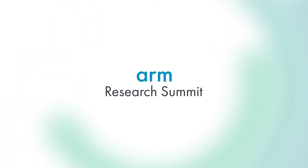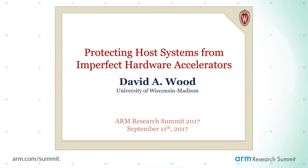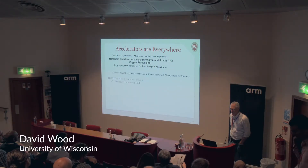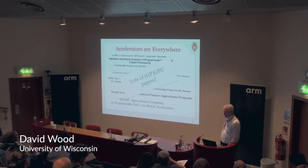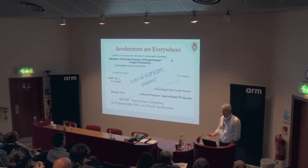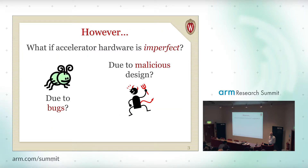Thank you. I'm going to be talking about protecting host systems from imperfect accelerators. We all know that accelerators are pretty much everywhere. Every conference you look at there's a bunch of new papers, and that doesn't even count all the GPGPU papers, which are also accelerators. The question we're interested in is: what if accelerators are imperfect?